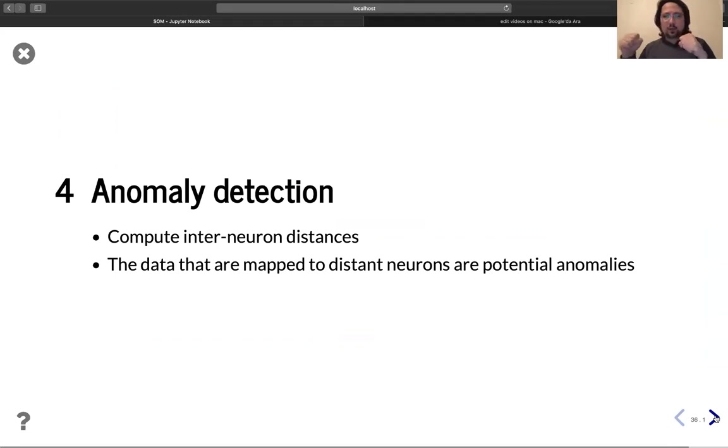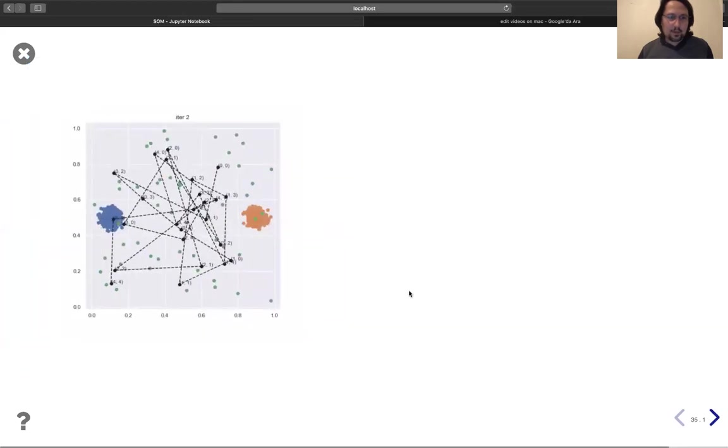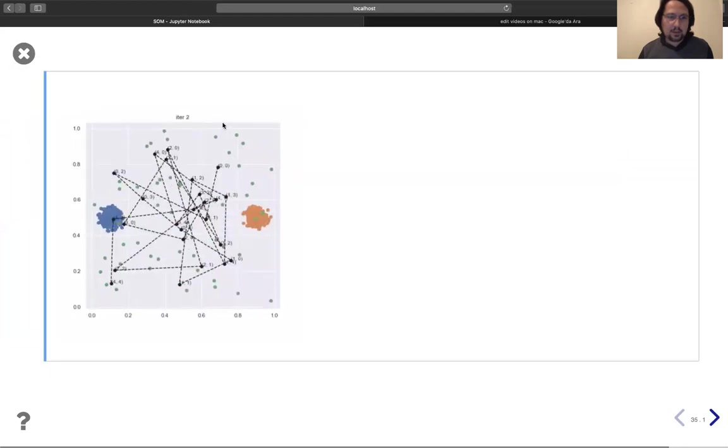And if you find this corresponding map, actually you can use this for dimension reduction. Another application could be anomaly detection. I will talk about it. Let's look if this is finished. I think it is finished. Let's run it.